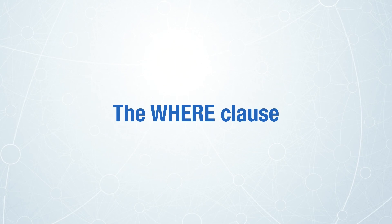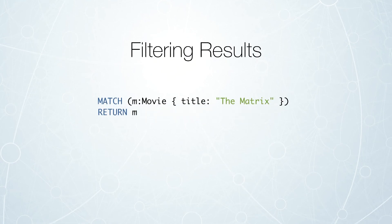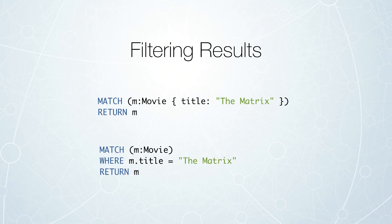An important part of Cypher querying is specifying the WHERE clause, which is used for filtering results. You've seen in some past examples how we filtered results for a particular match — in this case, finding a movie with the title of Matrix using that JSON-like syntax. We can also use the WHERE clause and specify the query as: find a movie WHERE m.title equals The Matrix. Both of these represent the same thing — the JSON-like syntax is just easier at times.